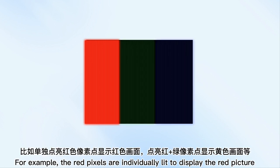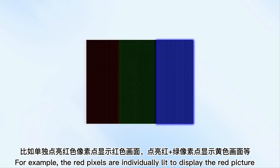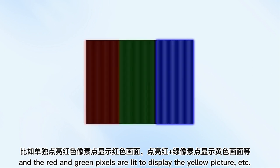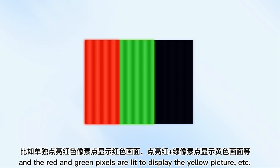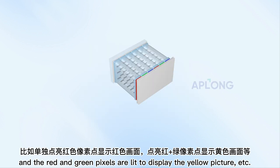For example, the red pixels are individually lit to display a red picture, and the red and green pixels are lit together to display a yellow picture, etc.